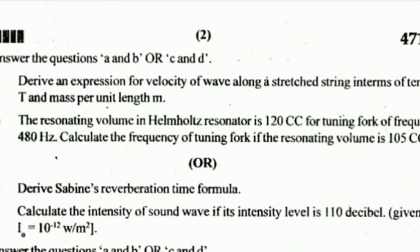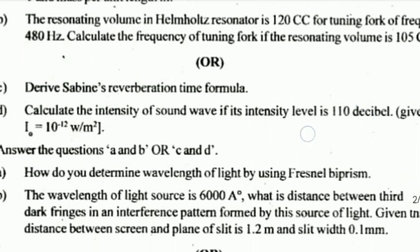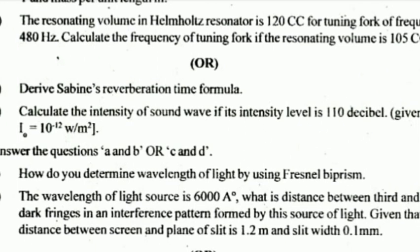The numbers in brackets indicate the marks — 8 and 4. Main question number four: A) How do you determine the wavelength of light by using Fresnel's biprism? (8 marks) B) The wavelength of a light source is 6000 Ångström. What is the distance between the third and fifth dark fringes in an interference pattern formed by this source? Given: distance between screen and plane of slit is 1.2 meter and slit width is 0.1 meter. (4 marks)